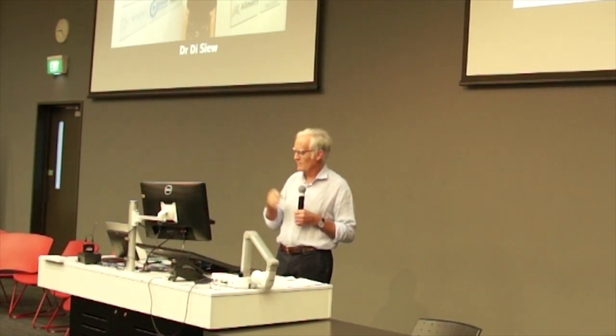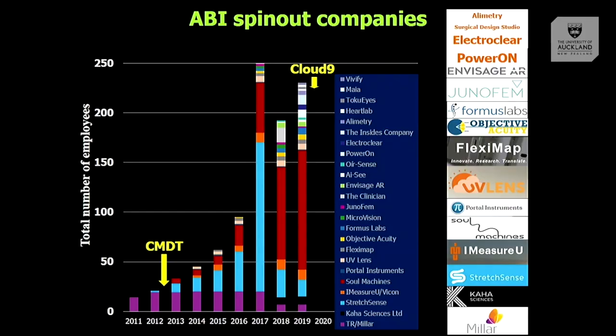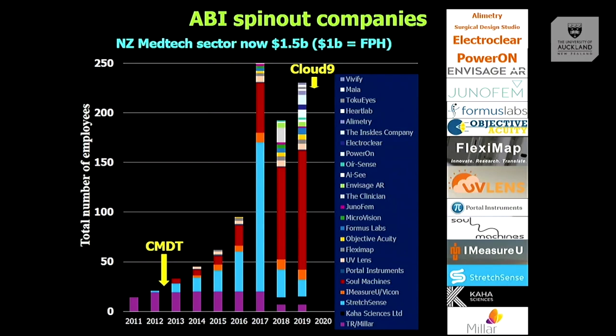One of the really important outcomes of the ABI is our ability to create spin-out companies that employ our students. There has been quite significant growth in spin-outs over the 10-year period. We certainly hope to create much more of a med tech industry sector in New Zealand — it is now 1.5 billion and one of the fastest growing sectors in the New Zealand economy.